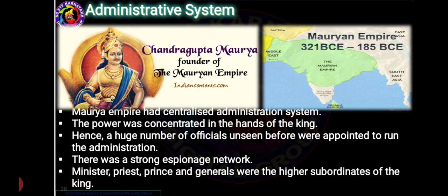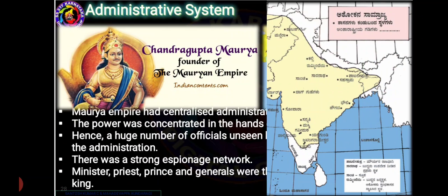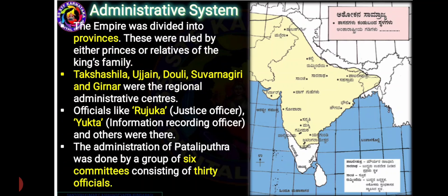The Mauryan Empire had a centralized administration. Power was in the hands of the king, and many officers were appointed. Ministers, priests, princes and generals were the higher officials. The empire was divided into provinces looked after by the king's family. The main regional centers were Takshashila, Ujjain, Dhawali, Suvarnagiri and Girnar. Officials like Rujukha, the Justice Officer, and Yukta, the Information Recording Officer, were also present.